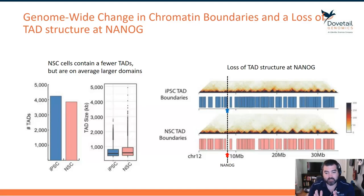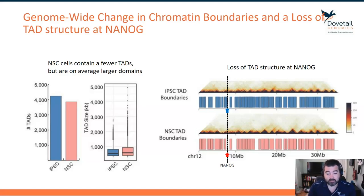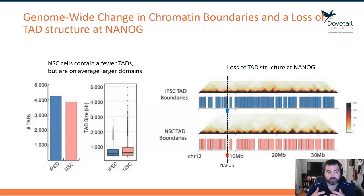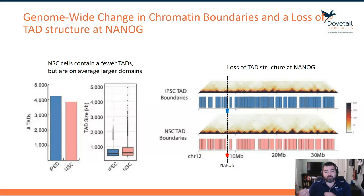In the iPSC, NANOG occurs within a TAD. In the NSC cell type, that TAD is now missing — that domain of increased interactome is gone. That's another line of evidence that the topology specific to NANOG is quite different between these two cell types.